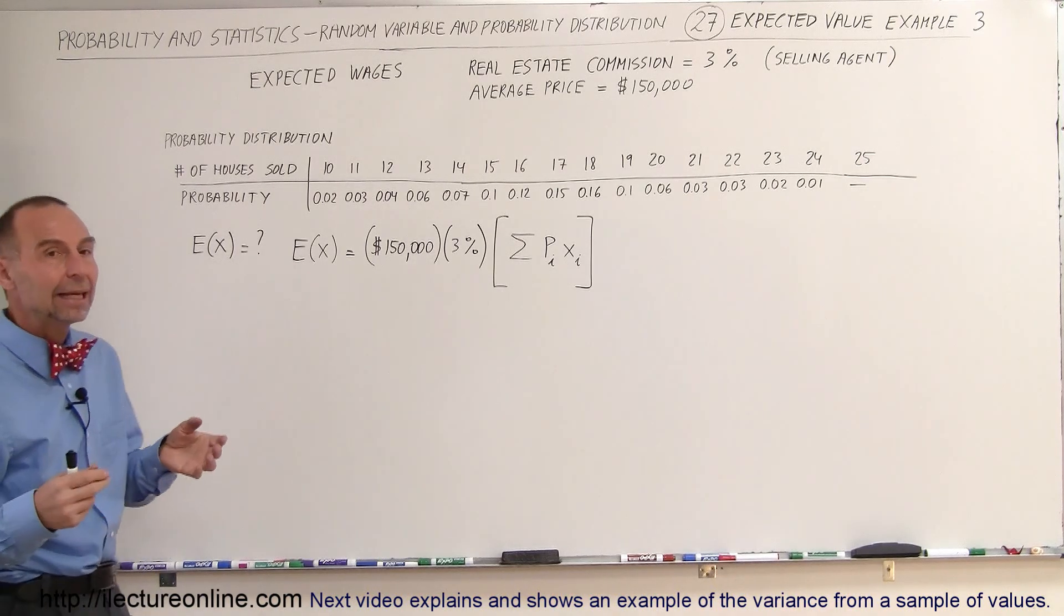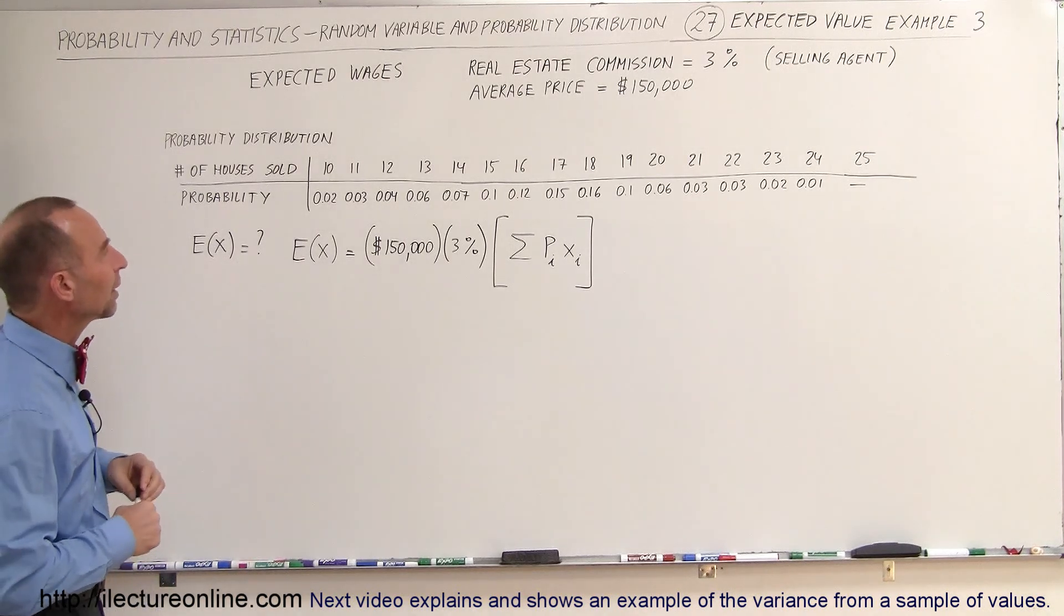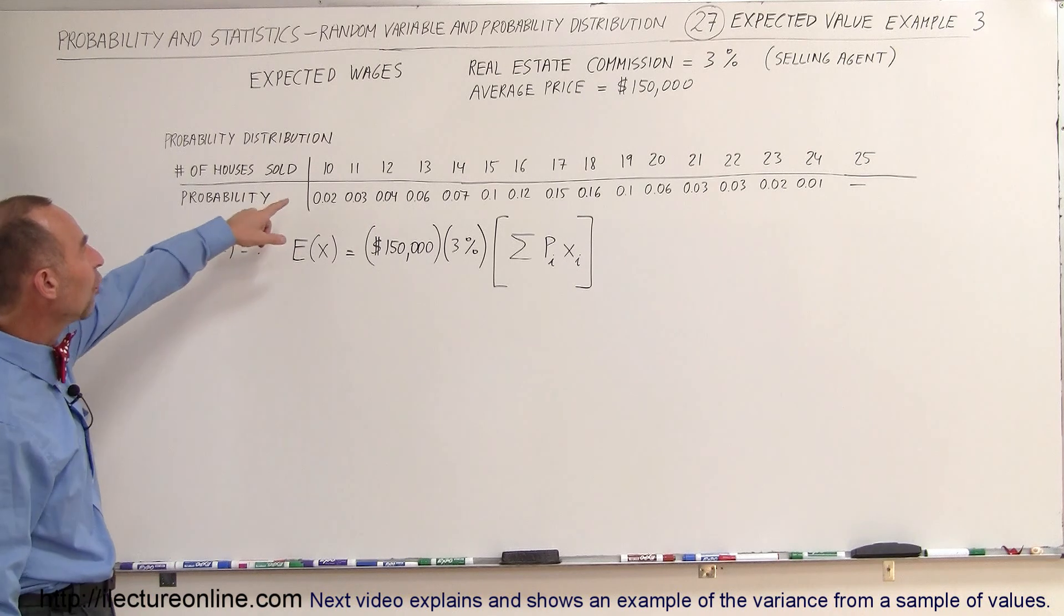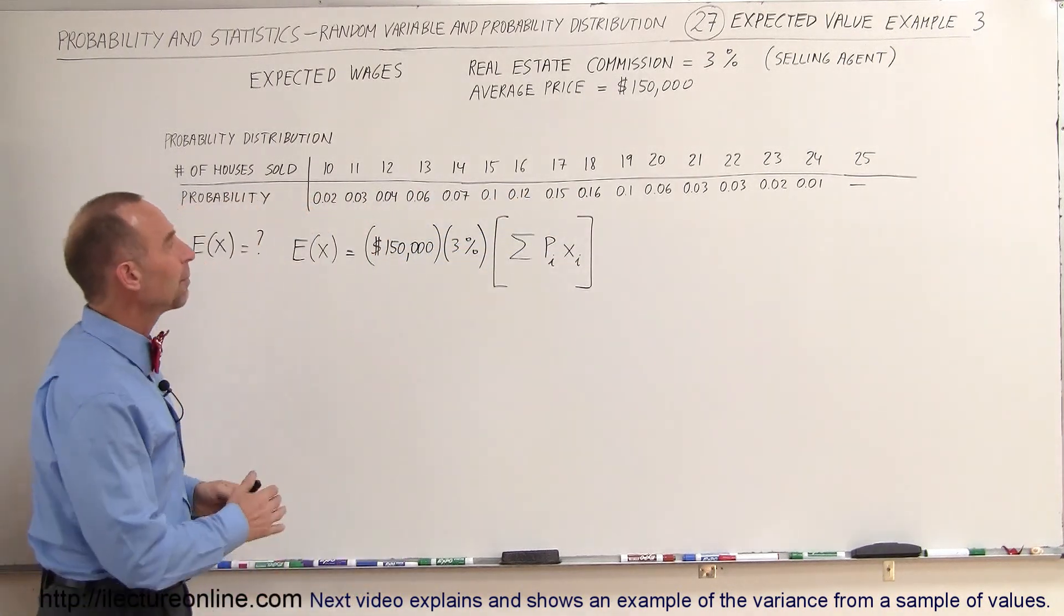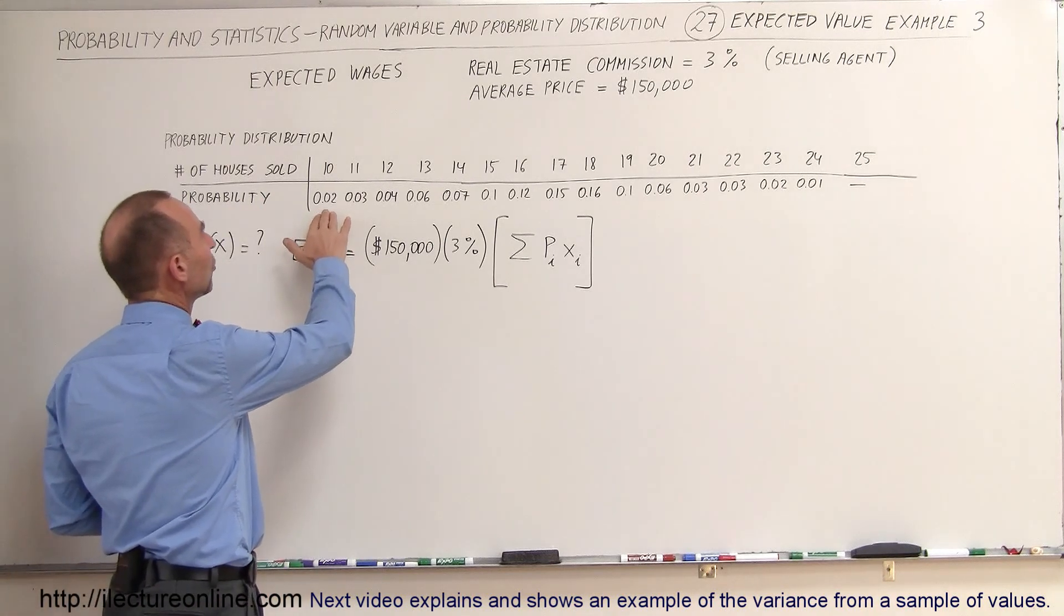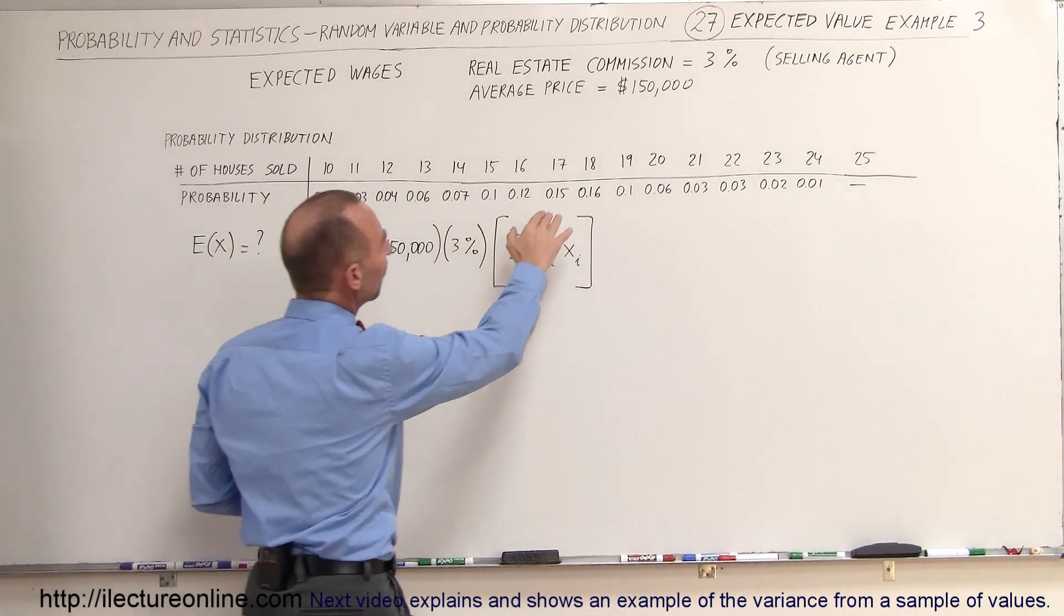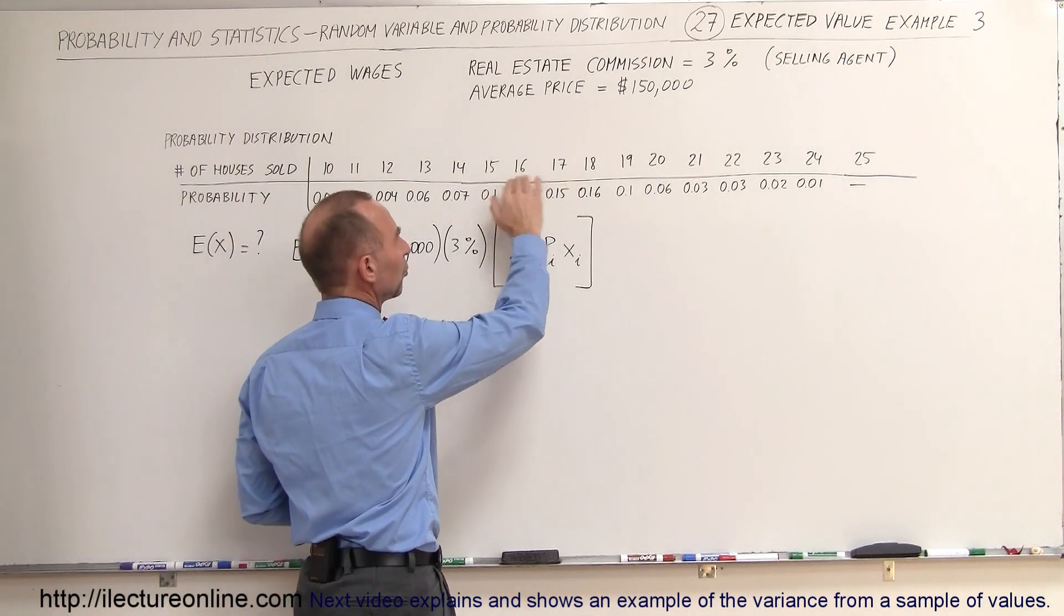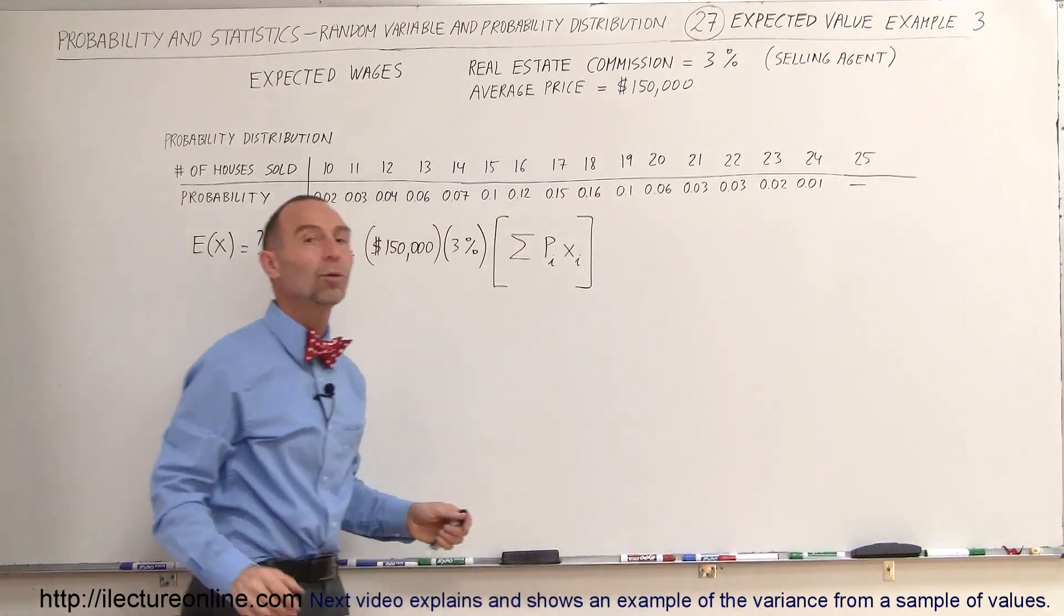And by doing some research, it is expected that a selling agent in an office in that area can expect to see a sale of homes anywhere from 10 to 24 homes, and the probability of those numbers run 0.02 or 2% probability that 10 homes will be sold. Let's say 15% probability 17 homes will be sold and so forth down to just 1% probability that 24 homes will be sold and 0% probability that any more than 24 homes will be sold.